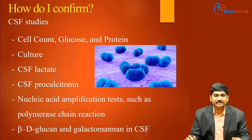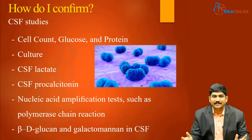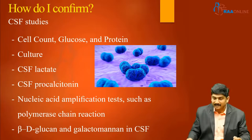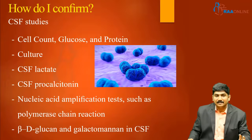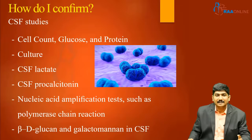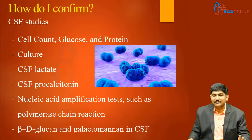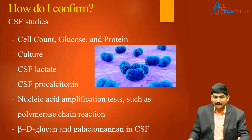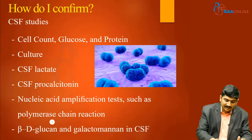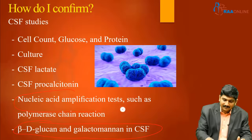To confirm the diagnosis, perform CSF analysis. If an external ventricular drain is already in place, take the sample from it. Send for cell count, glucose, proteins, and cultures. Additionally, send CSF lactate, CSF procalcitonin, nucleic acid amplification tests such as PCR for specific viruses, and beta-D-glucan and galactomannan in CSF to check for fungal meningitis. These are markers of infection.